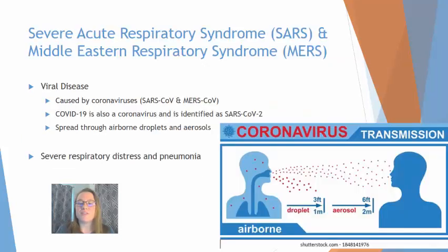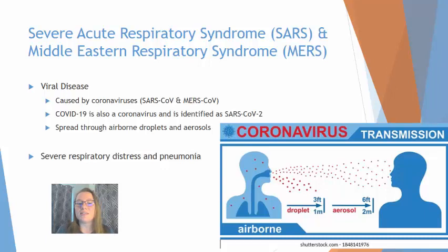Severe Acute Respiratory Syndrome or SARS, and MERS (Middle East Respiratory Syndrome), are both viral diseases caused by coronaviruses. COVID-19 is also a coronavirus, identified as SARS-CoV-2 — the second major outbreak of a SARS coronavirus.